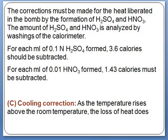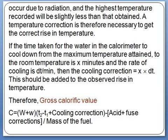Third, the cooling correction: as the temperature rises above room temperature, heat loss due to radiation occurs, so the highest temperature recorded may be slightly less than the actual value. A temperature correction is therefore necessary to get the correct rise in temperature. If the time taken for the water to cool from maximum temperature to room temperature is X minutes and the rate of cooling is dT per minute, then the cooling correction is X × dT. This value should be added to the observed rise in temperature.